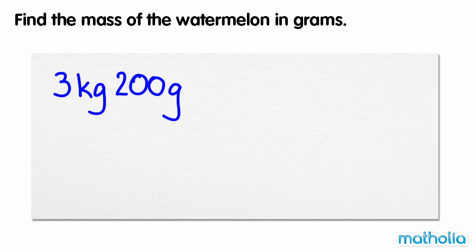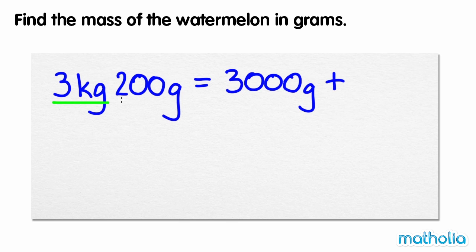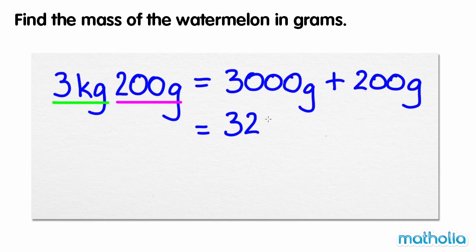We know that 1 kilogram is equal to 1,000 grams, so 3 kilograms is equal to 3,000 grams. We can rewrite 3 kilograms 200 grams as 3,000 grams plus 200 grams. 3,000 plus 200 equals 3,200, so the mass of the watermelon is 3,200 grams.